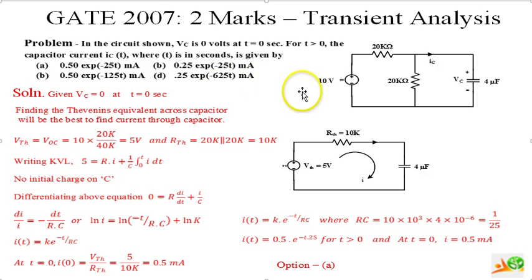And the best way to find the capacitor current is to Theveninize the network, that means to find out the Thevenin's equivalent across this capacitor, replace by the Thevenin's equivalent and then find the current. Finding the Thevenin's equivalent across capacitor will be the best to find the current through the capacitor.